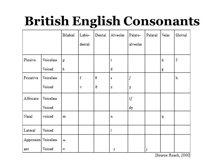According to places of articulation, British English consonants can be bilabial, labiodental, dental, alveolar, palatal, velar, or glottal.